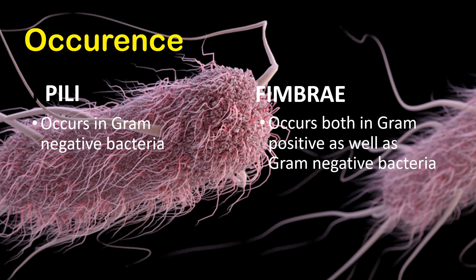Next is occurrence. Pili always occur in gram-negative bacteria, but it is also seen that in some gram-positive bacteria pili are present. In contrast, fimbriae occur in both gram-positive as well as gram-negative bacteria.